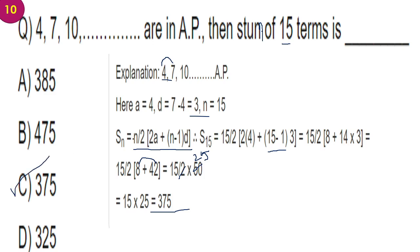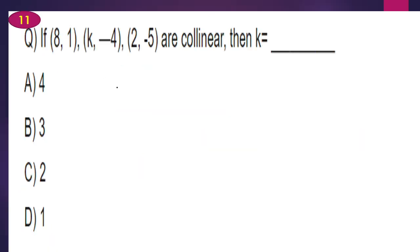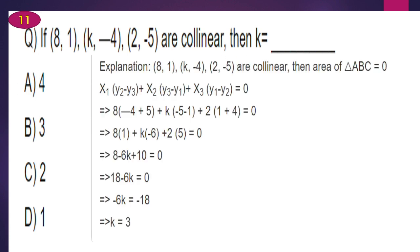Next problem: if (8,1), (k, minus 4), (2, minus 5) are collinear, then k equals? Using the collinear condition, the area of triangle ABC equals zero. Applying the area formula: x1(y2 minus y3) plus x2(y3 minus y1) plus x3(y1 minus y2) equals 0. Filling in the values and solving gives k equals 3 as the right answer.